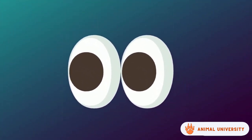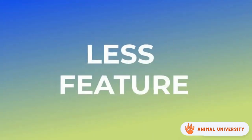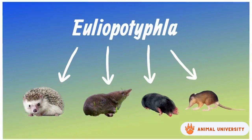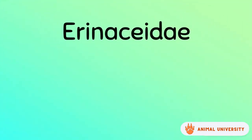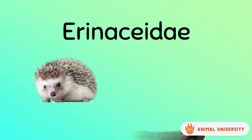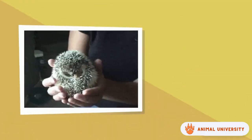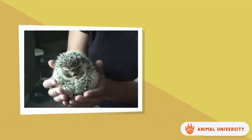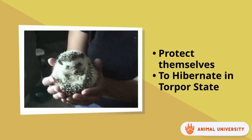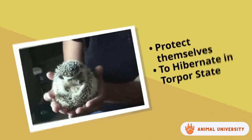They have good hearing, touch, and smell, but poor eyesight because they don't really require eyesight in hunting insects. Erinaceidae, which includes the cute hedgehog and the moonrats, has spines on their body which is made out of keratin, used for defense when they roll into a ball to protect themselves and also when they hibernate in a torpor state.